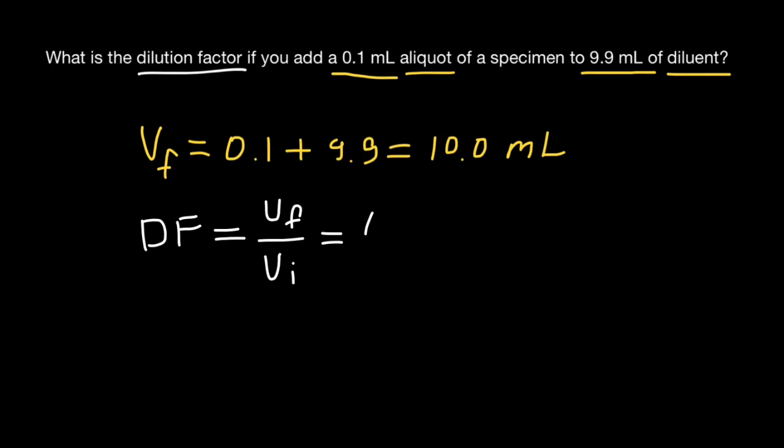That means 10 milliliters divided by 0.1 milliliters so we can cross out milliliters.